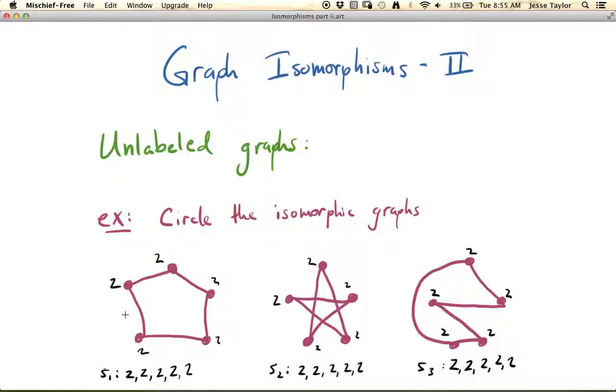Okay, if you paused, great. If not, we're going to go ahead and talk about them. So essentially what we want to do is be able to label the vertices of any of these graphs to make them exactly equal to any of the other graphs.